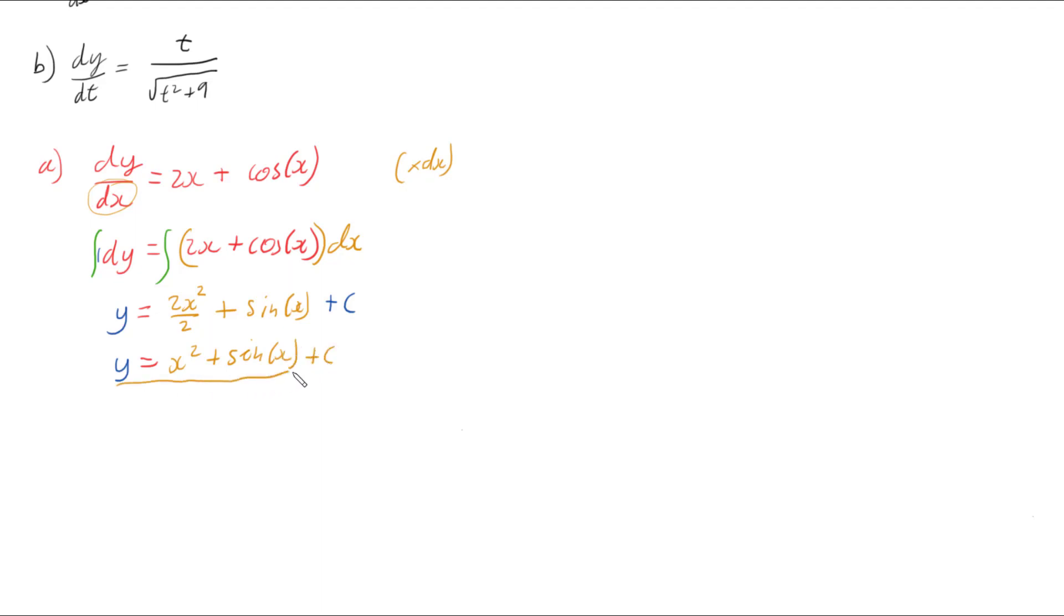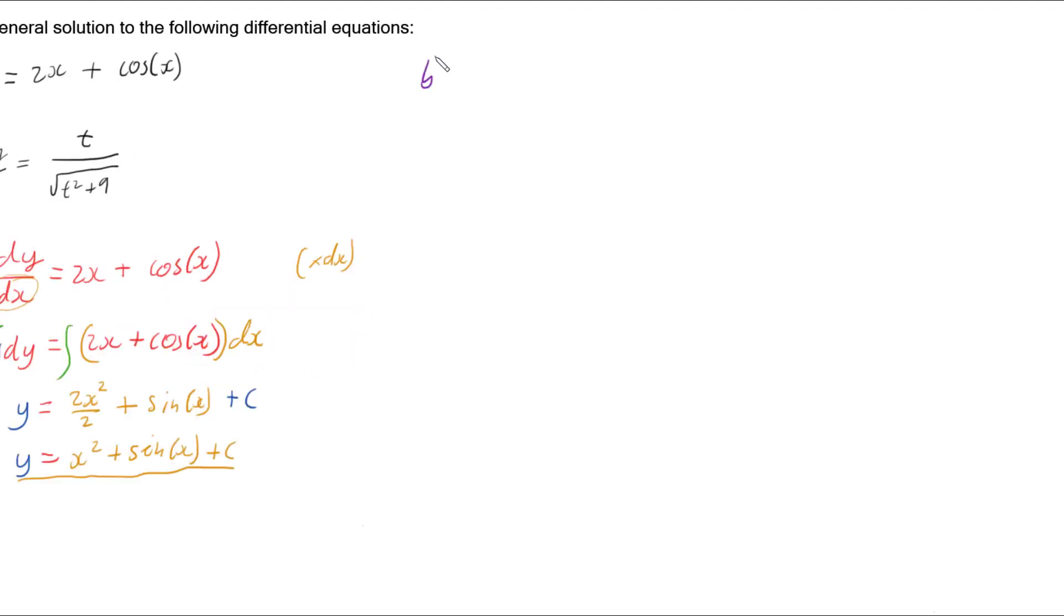And because it's got a plus c in it, that makes it a general solution. If we had some information given to us like initial conditions or a value, we could work out what that c is. So now let's have a look at part b.